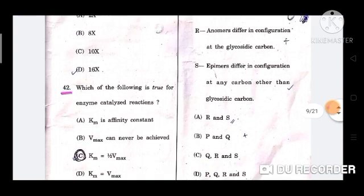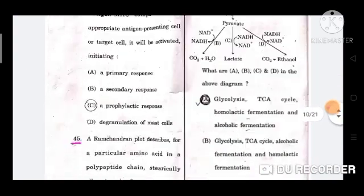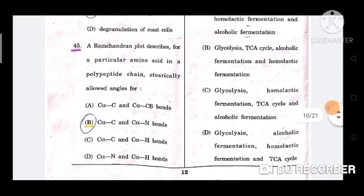Question number 45: A Ramachandran plot describes for a particular amino acid in a polypeptide chain, sterically allowed angles for option B, C alpha C, C alpha C and C alpha N bonds.